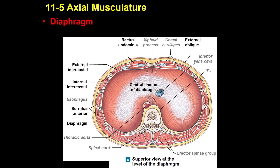If the diaphragm is paralyzed, the person cannot survive — it is a very important muscle. These are the muscles of the abdomen, chest wall, and back, as you can see in this area.